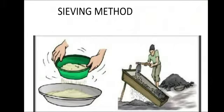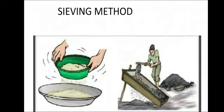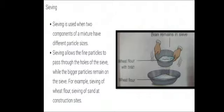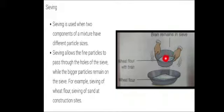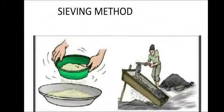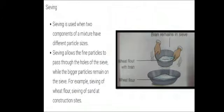Another method is sieving, in which a sieve or net of fine pores is used to separate particles of different sizes. Sieving is used when two components of a mixture have different particle sizes. It allows fine particles to pass through the holes of the sieve while bigger particles remain on top. Examples include sieving of wheat flour and sieving of sand at construction sites.